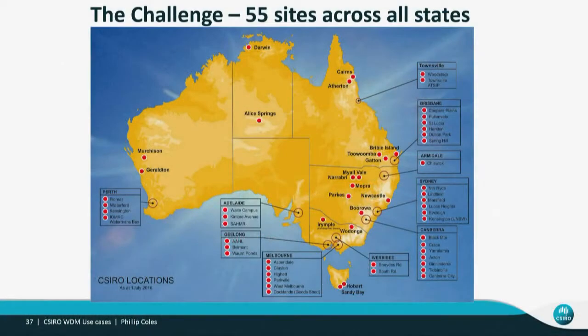So this is a challenge that we in CSIRO face. We have approximately 55 sites spread out across Australia — and that slide is actually slightly out of date now, we've got another one in WA and the challenge only grows. We have many different service providers, quite a few R-Net links, both dark fibre and optical services across interstate, and how we interface to those services.